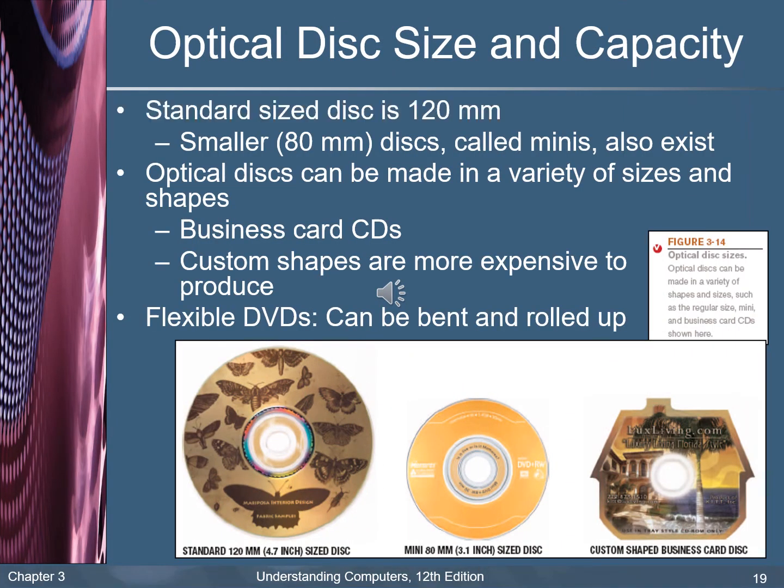The figure shows some types of optical disk. The standard size of a disk is 120 millimeters in diameter. Smaller disks have 80 millimeters in diameter — these are called mini disks. Optical disks can be made in a variety of sizes and shapes. Business card CDs and custom shapes are more expensive to produce. Flexible DVDs can be bent and rolled up.